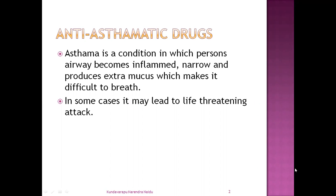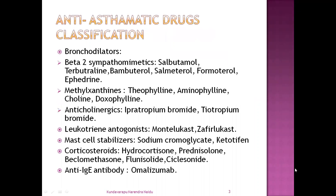In some cases, asthma may lead to a life-threatening attack — the patient may die because of asthma in some cases. So what are anti-asthmatic drugs? These are the classifications of anti-asthmatic drugs which are used to treat asthma. The first one is bronchodilators, which are used for dilating or relaxing the bronchial smooth muscles. In that there are again three subclasses.